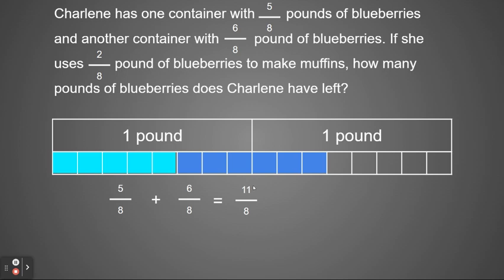So we know she had a total of 11 eighths and she's going to use two eighths. So my next equation, I'm going to start with my 11 eighths that she has. And I'm going to take away two eighths.